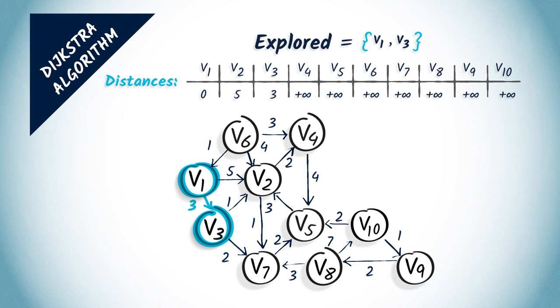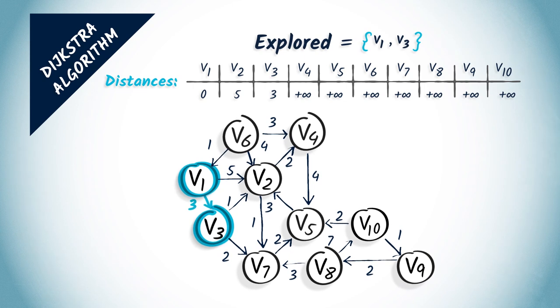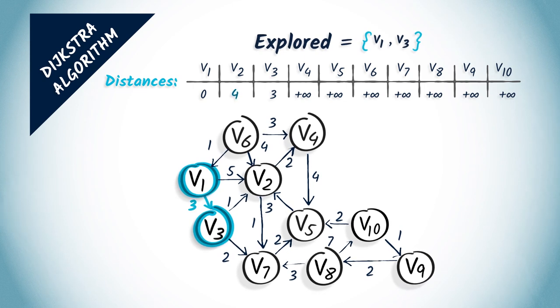So, if we want to reach v2 by going through v3 one hop before, we have a total cost of 3, which is the total cost to go to v3, plus 1, which is the cost of doing one hop from v3 to v2. This is better than the previous distance we estimated for v2. So, we modify the distances accordingly.